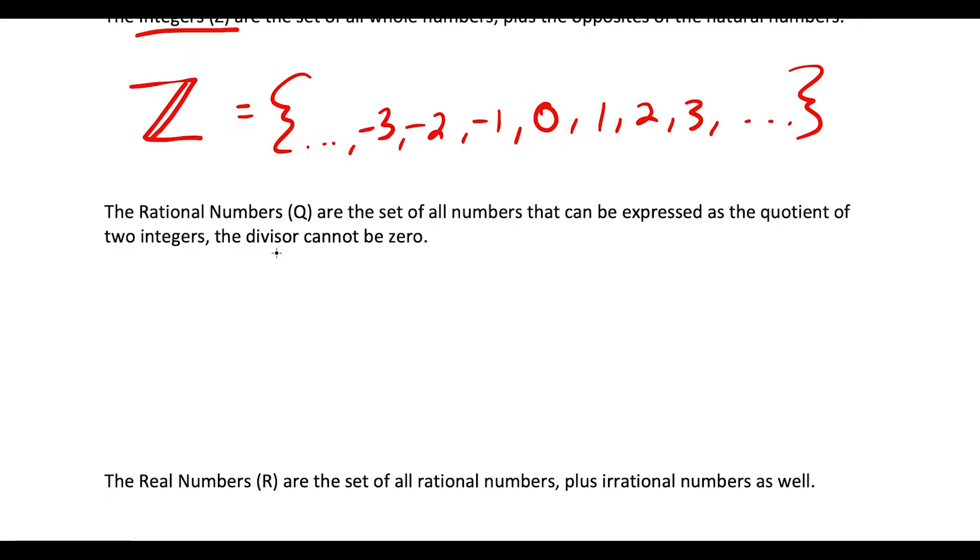The next set of numbers is the rational numbers, and now it's going to get a little bit trickier to list them. The symbol for the rational numbers is Q with a vertical line through it. Examples of rational numbers would be something like one third. We could have a terminating decimal like 5.7.